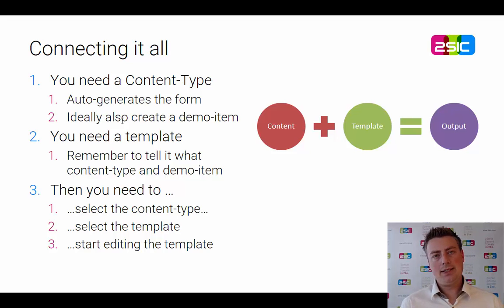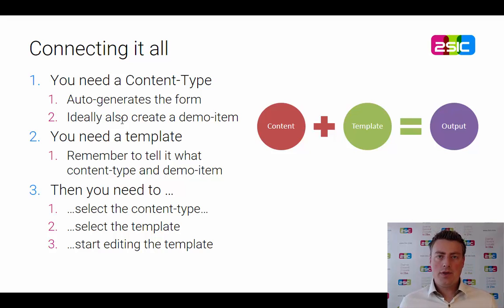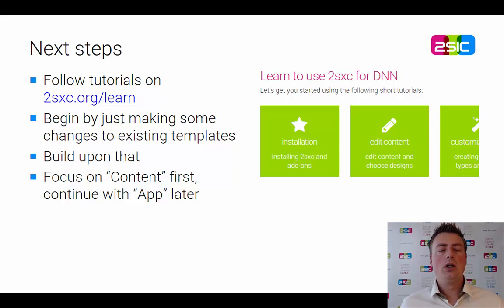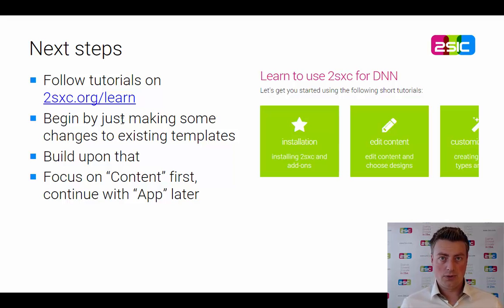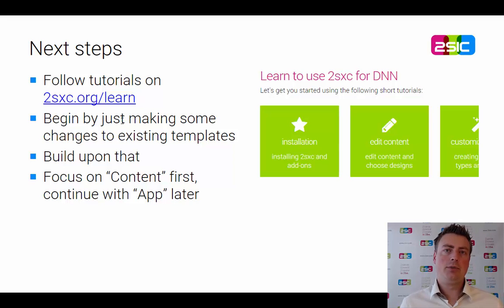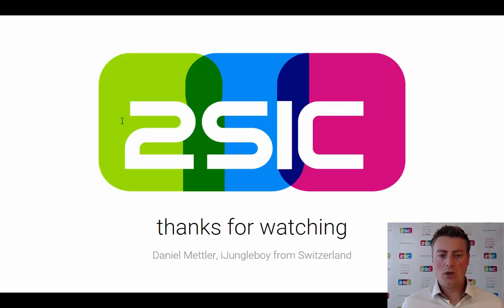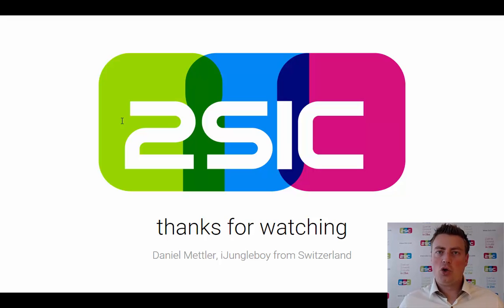Summarizing: you need content, you need templates, and you get the output. It's very easy — just take care of HTML, CSS, and JavaScript to make things right. Next steps: learn more at 2sexy.org/learn, where there are lots of tutorials and step-by-step videos. Start small by tweaking existing things before creating your own solutions. Start with content first because it's simpler, then move to apps which are more sophisticated and allow you to export a functional block and reuse logic across sites — like creating a blog, tiles, or catalogs. Thank you for watching!